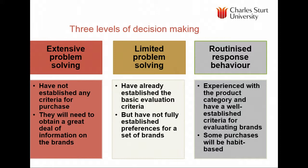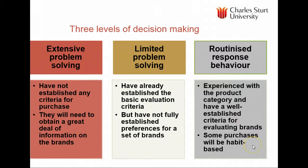Decision making varies according to involvement. Highly involved or new decisions involve extensive problem solving, where most information search and evaluation occurs. About 80 percent of our decision making falls into routine response behaviour — well-established criteria, brands, and purchases that are habit-based or based on brand loyalty. Limited problem solving is where we already have some basic evaluation criteria — buying new clothes or a new mobile phone — but don't have a fully established brand preference, so some search is still involved.